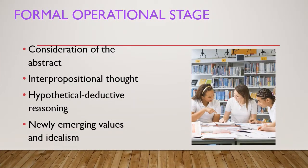The last stage is the formal operational stage. Its characteristics include consideration of the abstract, inter-propositional thought, hypothetical-deductive reasoning, and newly emerging values and ideas. This stage begins at age 12 and lasts into adulthood. As adolescents enter this stage, they gain the ability to think in an abstract manner by manipulating ideas in their head without dependence on concrete manipulation. Children become capable of thinking about abstract and hypothetical ideas that lead to multiple solutions or possible outcomes.